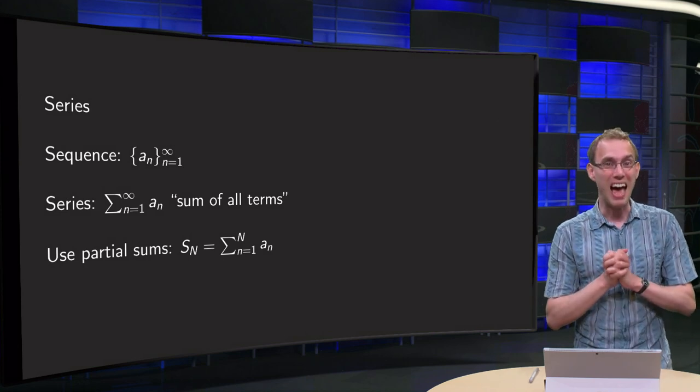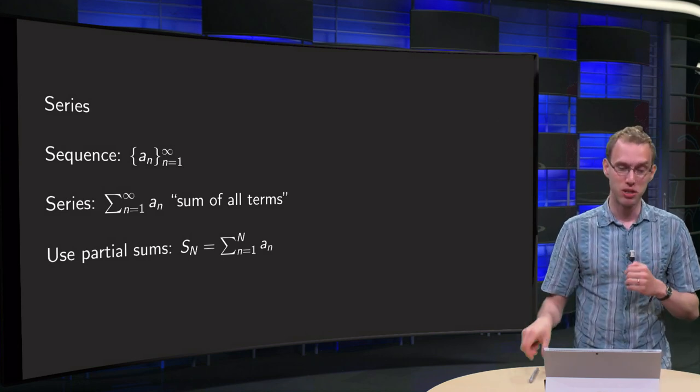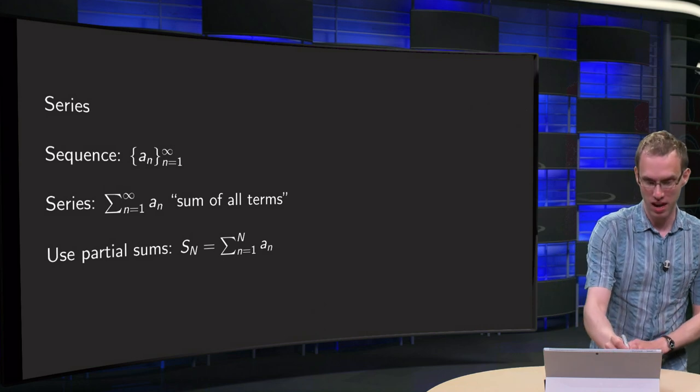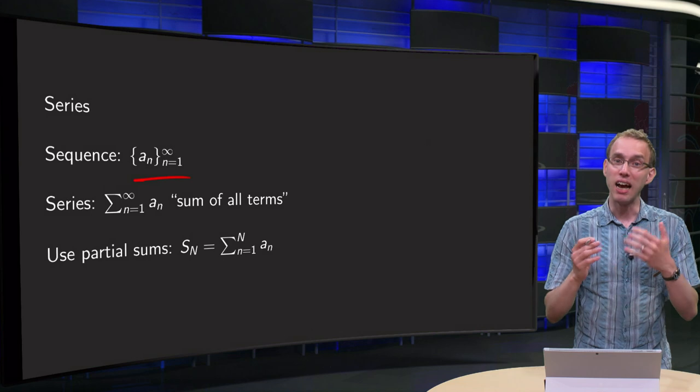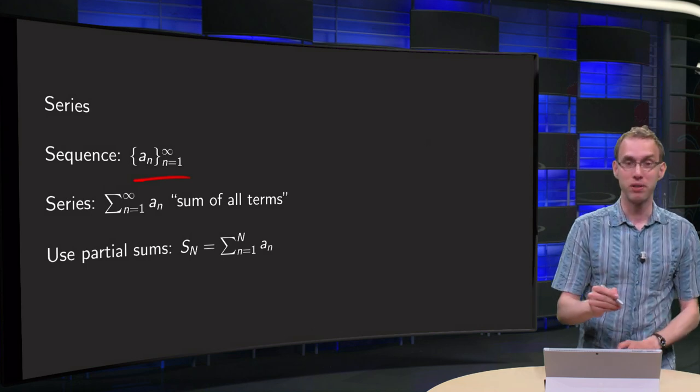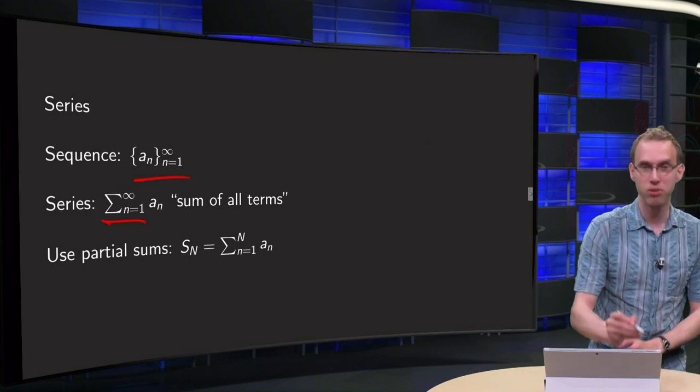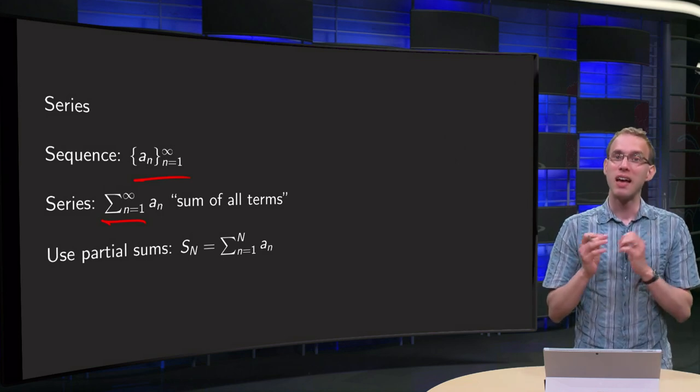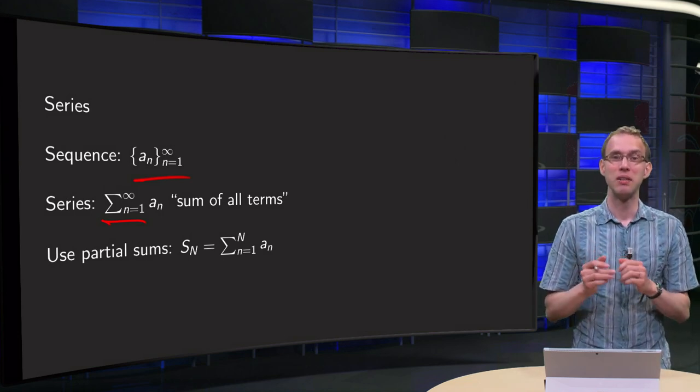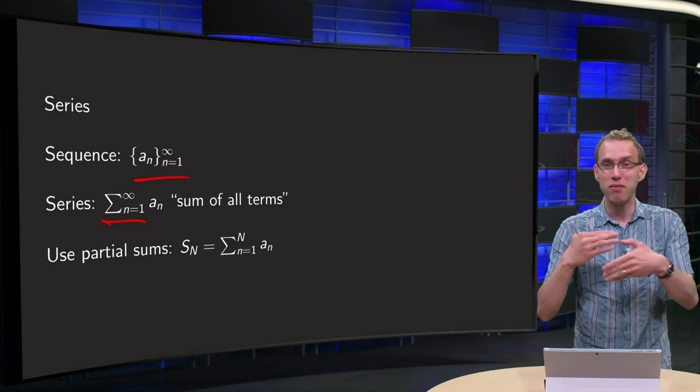So how are we going to add an infinite number of terms? So we start out with a sequence, a_n, n from 1 to infinity. And now I want to add them all up, so we write that with a summation notation, sigma n from 1 up to infinity. How can we do that? How can we add infinitely many terms?